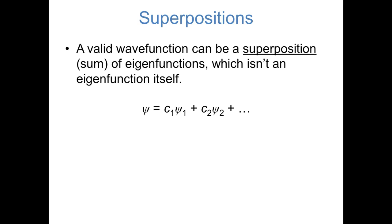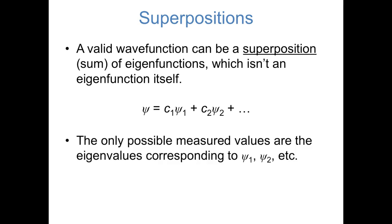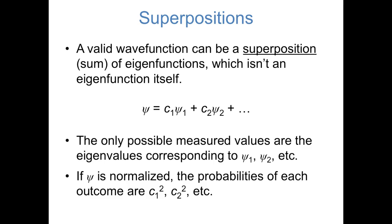This gets us to the idea of superpositions. A valid wavefunction doesn't have to be an eigenfunction of a given operator — it can be a sum of eigenfunctions, which is what we call a superposition. In general, we can define a wavefunction psi as some coefficient times the first eigenfunction plus some other coefficient times the second eigenfunction, etc. The only possible measured values are the eigenvalues corresponding to each eigenfunction — that's what the third postulate tells us. And if our superposition psi is normalized, the probabilities of measuring each outcome are proportional to the squares of the coefficients, c₁², c₂², etc.